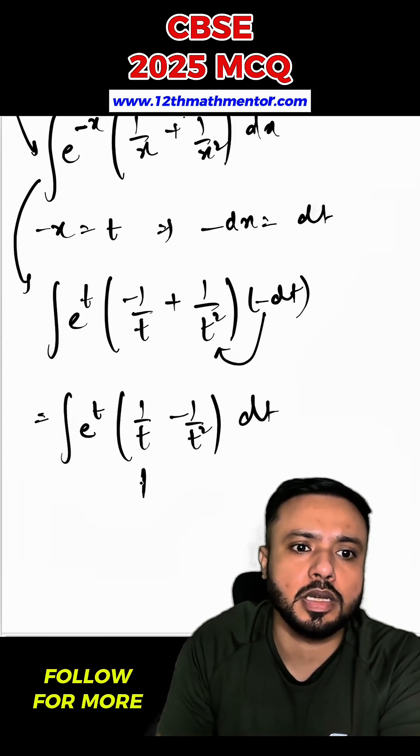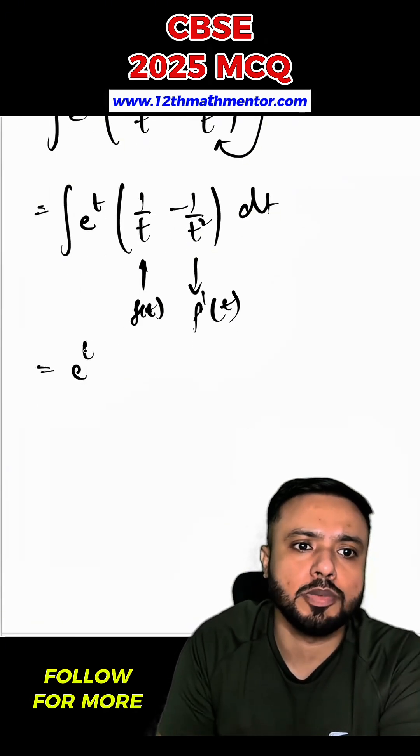You can clearly see here that f of t is, so this is nothing but f prime t. Hence we will use the formula. So the answer for this integral would be e raised to the power t, 1 by t plus c.